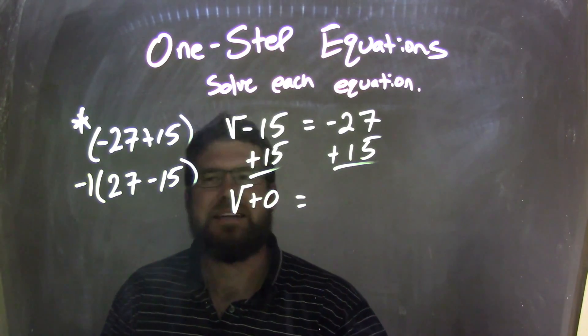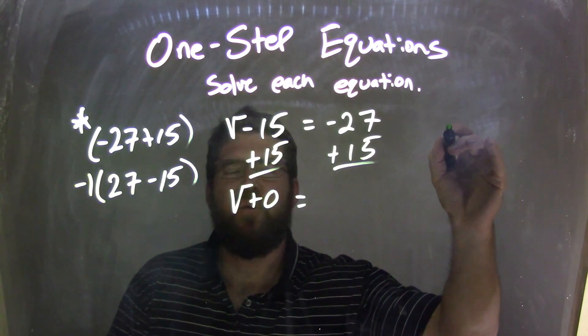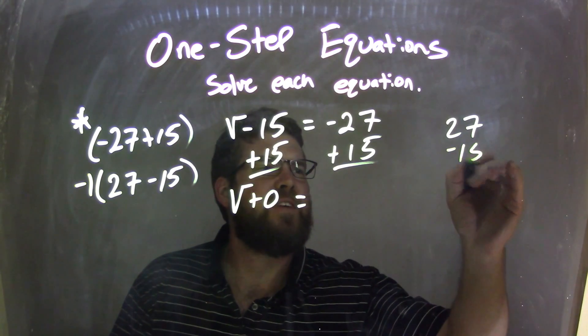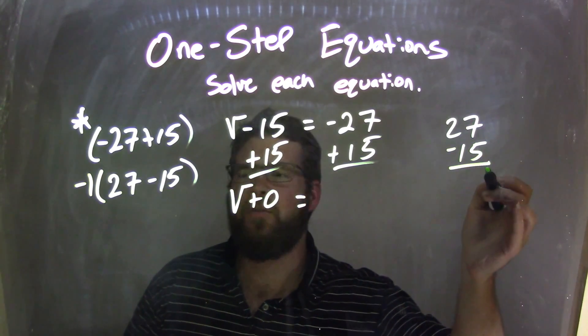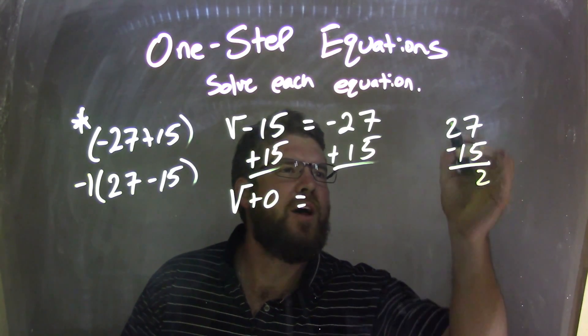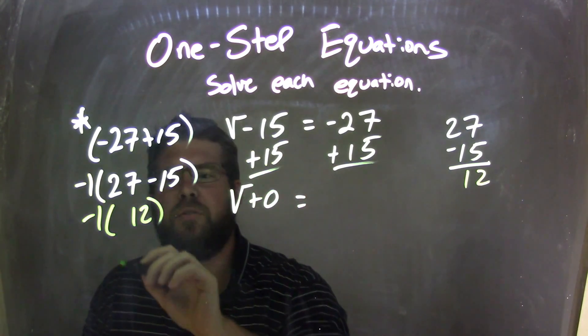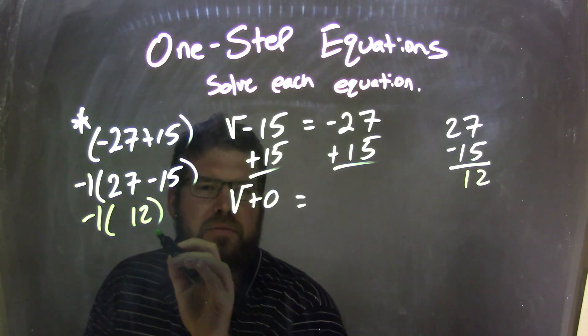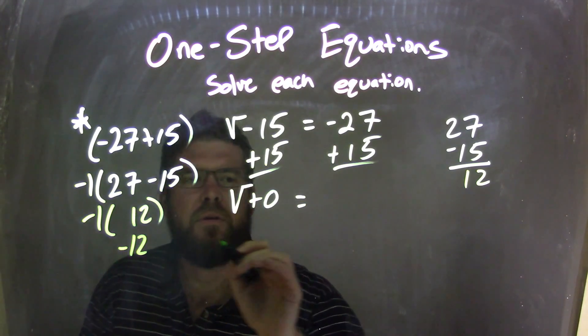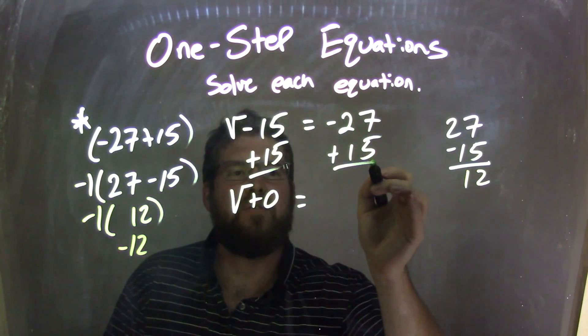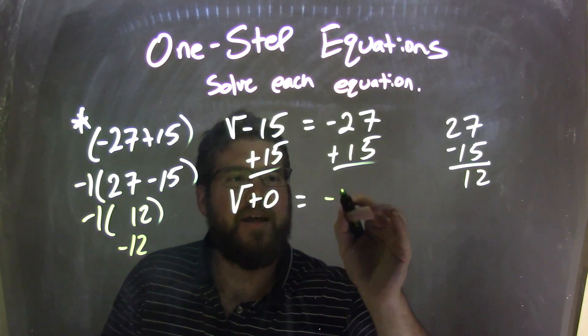But what this allows me to do is I think about, and I'm going to do it over here, what's 27 minus 15? Well, 27 minus 15, 7 minus 5 is 2, 2 minus 1 is 1, and we have 12. So we have negative 1 inside here, it becomes 12. Well, it's negative 1 times 12. Well, it's negative 12. And so negative 27 plus 15 comes out to be a negative 12.